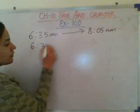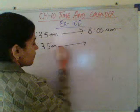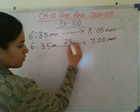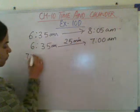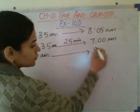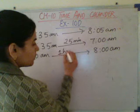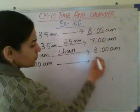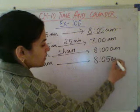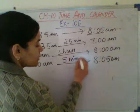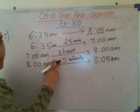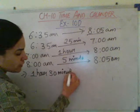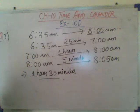It is very simple. From 6:35 a.m. to 7:00 a.m. is 25 minutes. From 7:00 a.m. to 8:00 a.m. is 1 hour. And from 8:00 a.m. to 8:05 a.m. is 5 minutes. So total: 1 hour and 25 plus 5 equals 30 minutes. She has 1 hour 30 minutes in her hand. This completes our Exercise 10D.